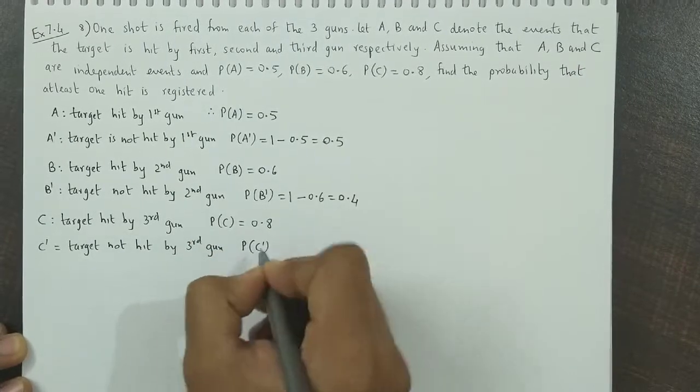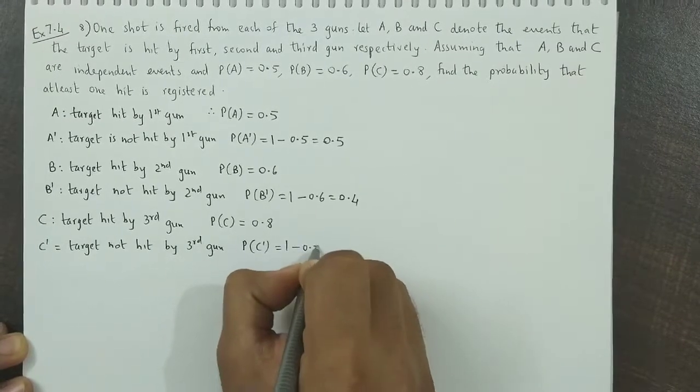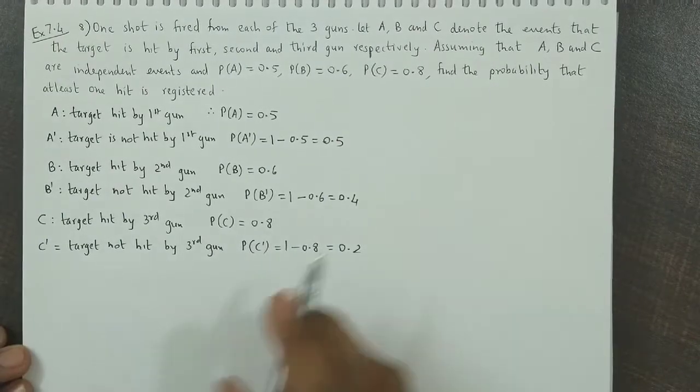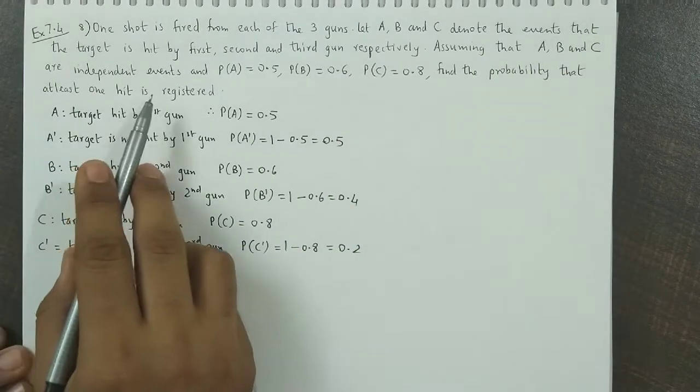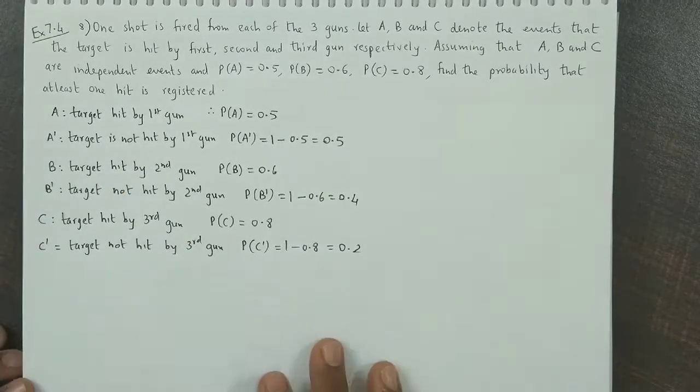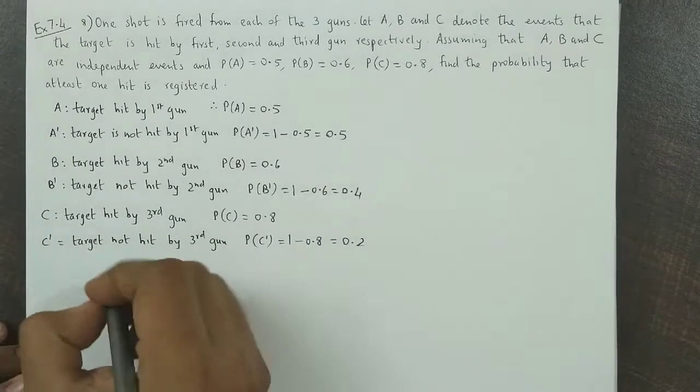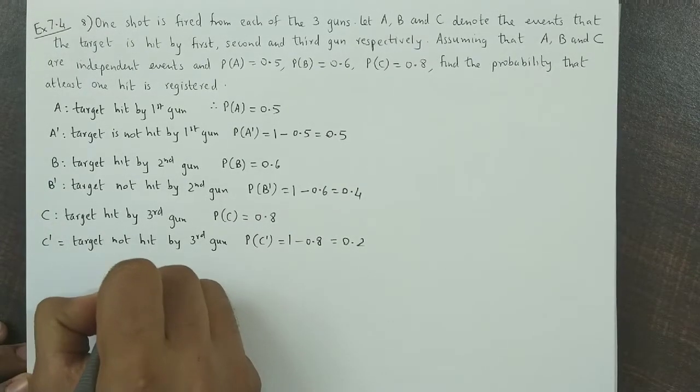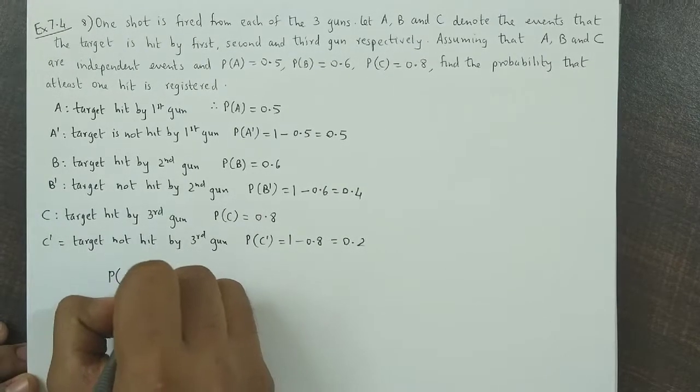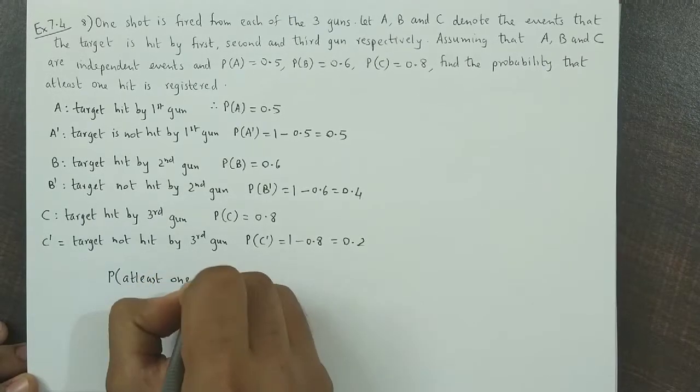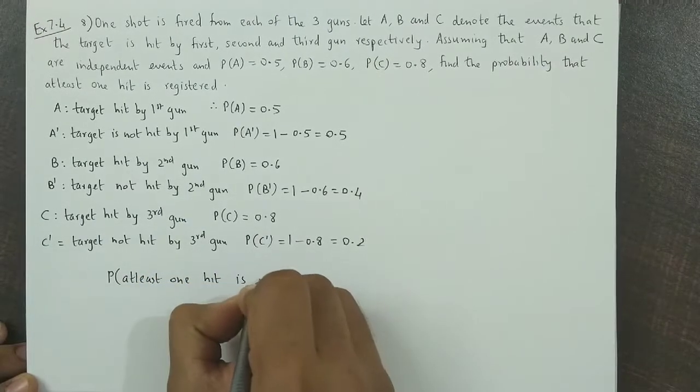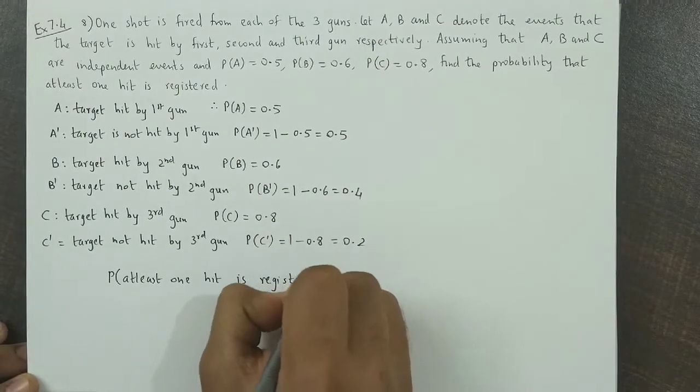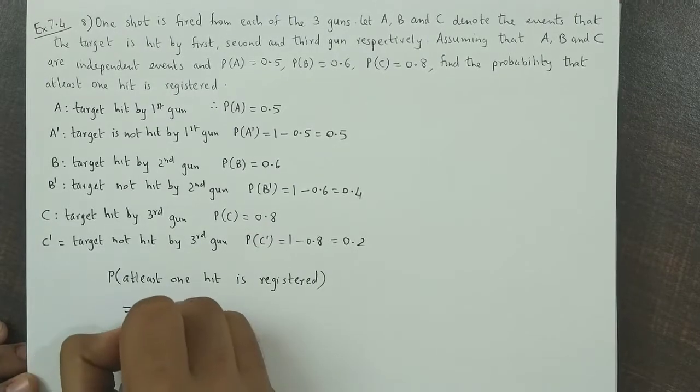P of C complement will be 1 minus 0.8, so that is 0.2. Now we're asked for the probability that the target is hit by at least one of them. So to find probability of at least one hit registered...